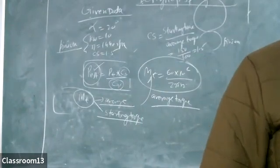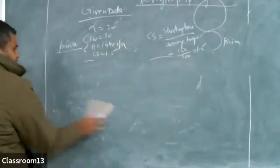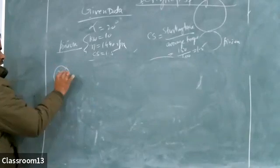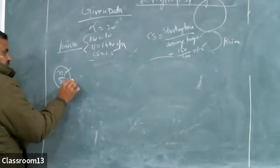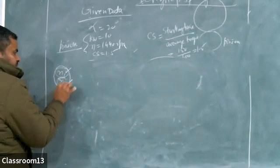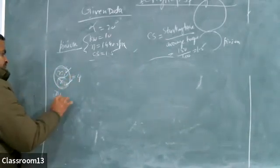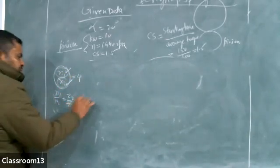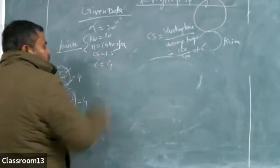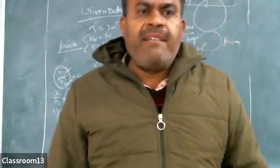The speed reduction ratio is given as 4. Speed reduction = N1/N2 = 4. We already know N1/N2 = Z2/Z1, so Z2/Z1 = 4, which is the gear ratio. So the gear ratio i = 4.